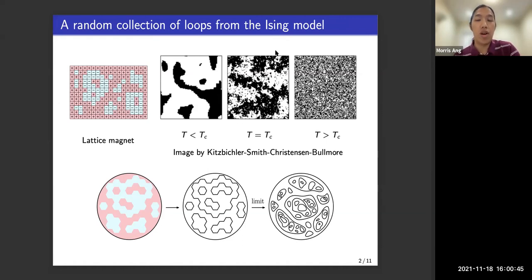So if you look at the spin field, that is the function on the plane taking values plus and minus one corresponding to the spins, and you take a scaling limit, it is known that the scaling limit is a conformal field theory. But today we want to instead focus on the interfaces between the plus and minus spins. So this gives us a random collection of loops, and in the scaling limit, this random collection of loops is supposed to converge to the conformal loop ensemble.